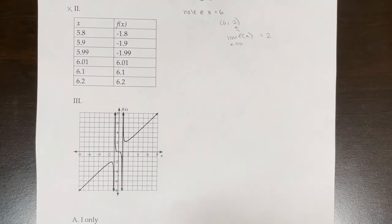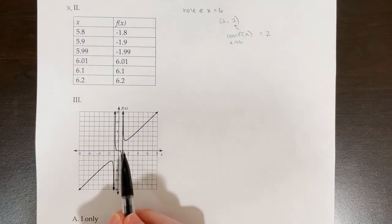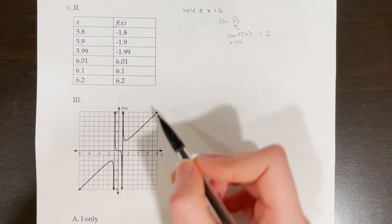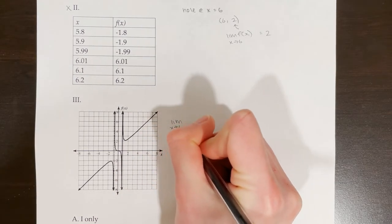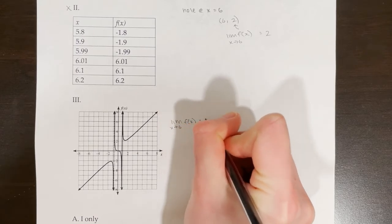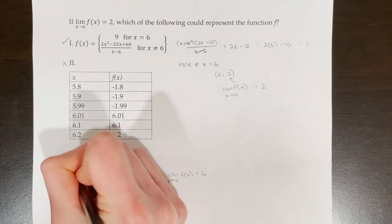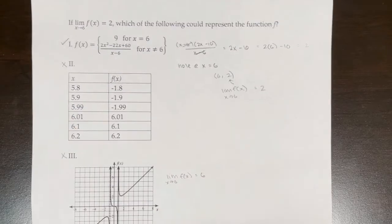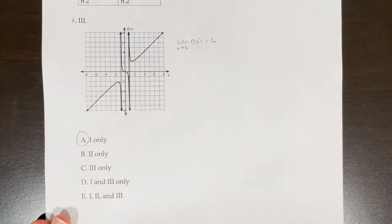The last representation is a graph. As I approach x equals 6 from the left, the y value approaches 6, and from the right it also approaches 6. So the limit as x approaches 6 is 6, not 2. Since this doesn't work, I place an X by number 3. Overall, only number 1 could represent function f.